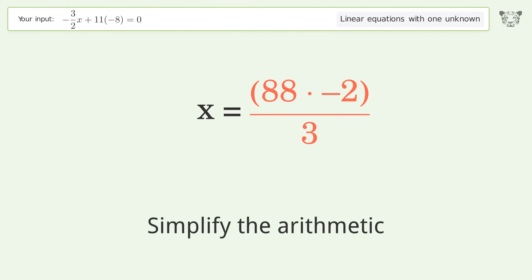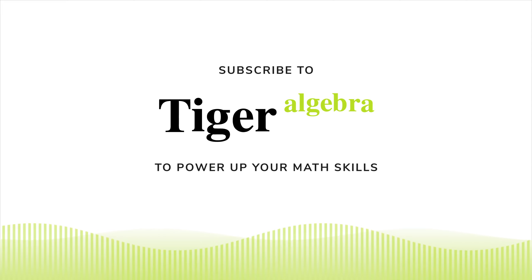Simplify the arithmetic. And so the final result is x equals negative 176 over 3.